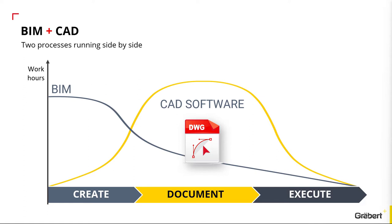BIM with 3D models and CAD with 2D execution drawings are two processes running side by side. BIM software are heavily used for the creation phase, but do a poor job at creating drawings. This is why in the second phase, CAD software are used to create most of the execution drawings. The problem is that in the meantime the BIM model will continue to change — a terrible waste of resources, because in AutoCAD the drawings will constantly need to be updated manually. It is also obviously a terrible source of mistakes. The workflow between BIM and CAD is completely broken.